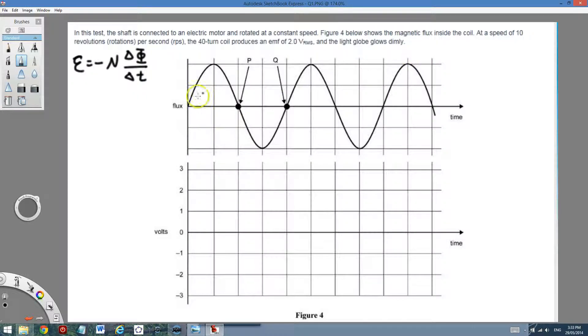This is a sine graph centered on zero. It has 40 to 10 turns. It tells me the peak voltage of the induced EMF which is 2. That's the peak. It tells me the speed is 10 revolutions per second, so 10 hertz.